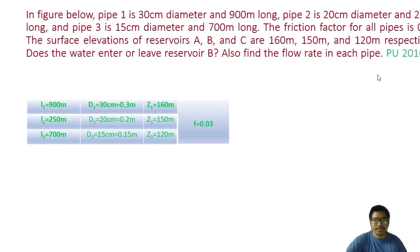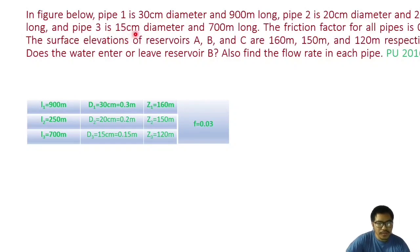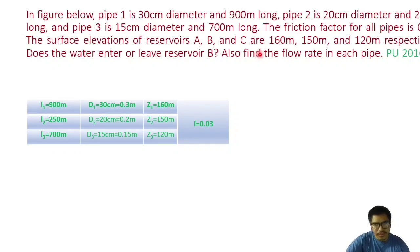This question was asked in Provencer University 2016 exam. Pipe 1 is 30 centimeter diameter and 900 meter long. Pipe 2 is 20 centimeter diameter and 250 meter long. Pipe 3 is 15 centimeter diameter and 700 meter long. The friction factor for all pipes is 0.03. The surface elevations of reservoirs A, B, and C are 160 meter, 150 meter, and 120 meter respectively. We need to determine whether water enters or leaves reservoir B and find the flow rate in each pipe.